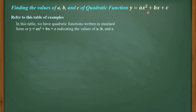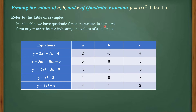Refer to the table of examples. In this table, we have quadratic functions written in standard form y = Ax² + Bx + C, indicating the values of A, B, and C. For y = x² − 3: notice there is no X term, so B = 0; the coefficient of x² is 1, and the constant is −3. Many students make the mistake of not considering the sign — the sign before the numerical coefficient must be included. The same applies to negative constants and negative leading coefficients.